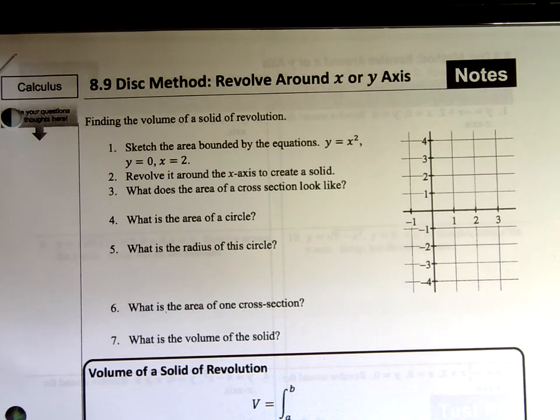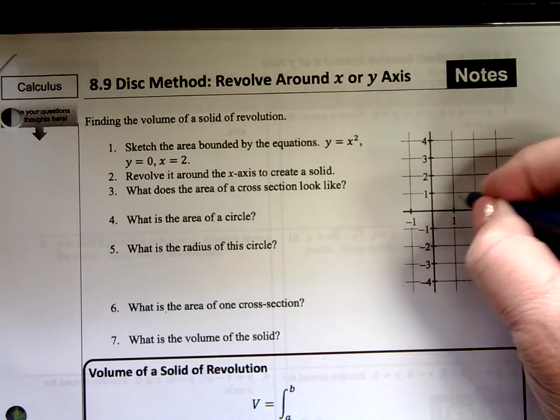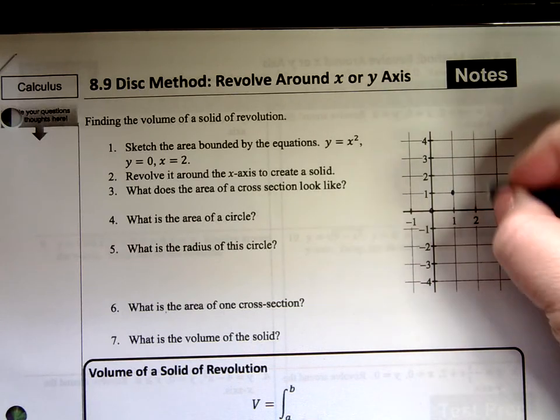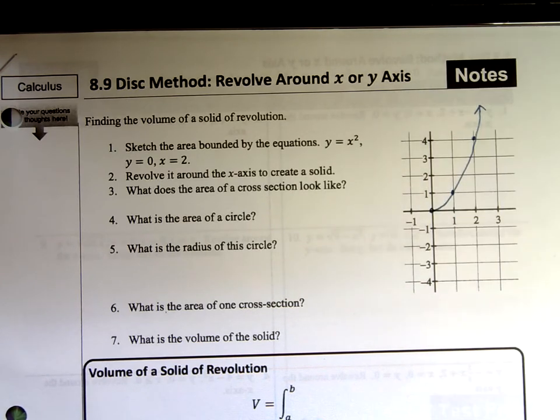So they want us to sketch the area bounded by x squared, y equals 0, and x equals 2. Well, x squared is your happy parabola and we're going to make this kind of exact since they gave us some points here. We know it starts at 0, 0. We know it goes 1, 1 and then 2, 4. All right, so here is my perfect sketch of y equals x squared.